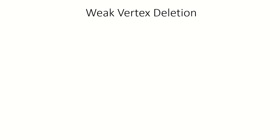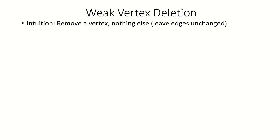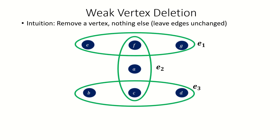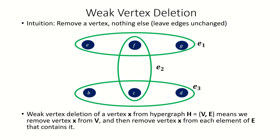Let's begin with weak vertex deletion. Weak deletion of a vertex is when we remove a vertex from the hypergraph without removing anything else. More formally, if we have a hypergraph H with vertex set V and edge set E, then weak deleting a vertex x from H means removing x from V and removing x from each edge in E that was incident to x. This produces a new hypergraph H minus x.